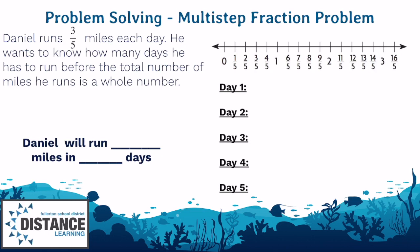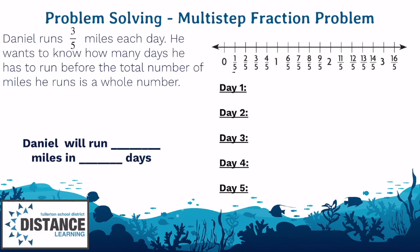So here, we know Daniel runs three-fifths of a mile each day. That means each day, take three-fifths of a mile. As you can see from the number line, each step that we take is out of five. So every step is one-fifth. Since Daniel is running three-fifths of a mile, it means take three steps. So one, two, three. So day one is in pink. We know Daniel went three-fifths of a mile.